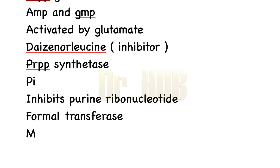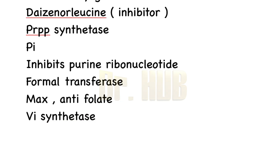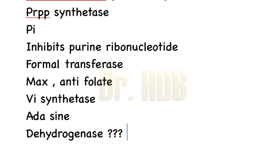Then we move on to formyl transferase, and this includes methotrexate (MTX) as well as anti-folate drugs as inhibitors. Then the FGAR synthetase — this is inhibited by azaserine.